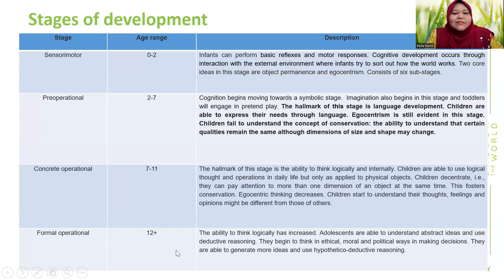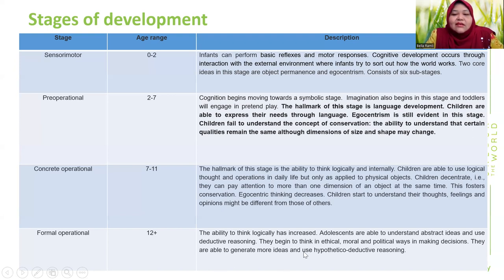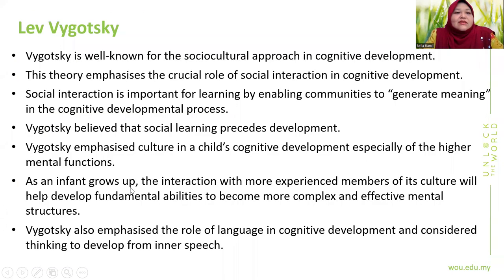At age 12 and above, children enter the formal operational stage. They are able to think logically about abstract ideas, use deductive reasoning, and begin to think in ethical, moral, and political ways when making decisions. They can generate more ideas and use hypothetical deductive reasoning. These stages can be achieved at varying rates depending on how well children interact with their environment.